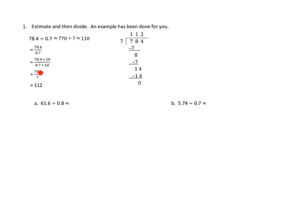That will just create a new equivalent fraction. So they go ahead and do that. So 78.4 times 10 is 784. And 7 tenths times 10 is just 7. And now they've got whole number division, especially a whole number in the denominator, and they can go ahead and do that division.